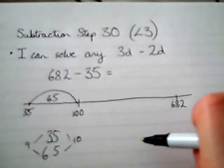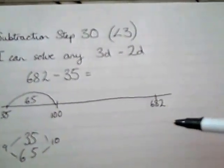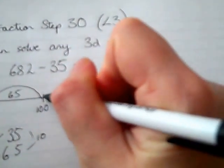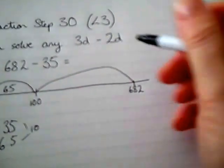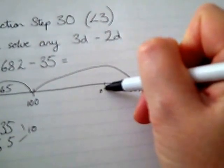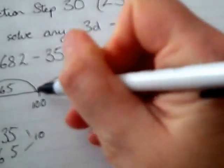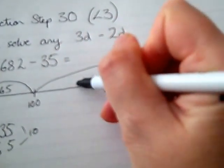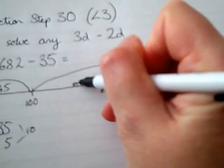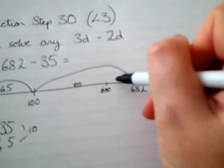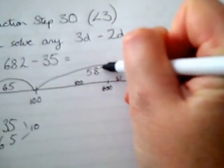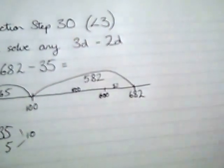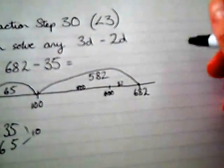Now next, I can jump from 100, and I'm going to jump from 100 to 682. If I need to stop off on the way, just to remind myself I can, I know that 100 to 600 is 500. I know that 600 to 682 is 82, so I must have jumped 582. I then add those two jumps together however I want to.